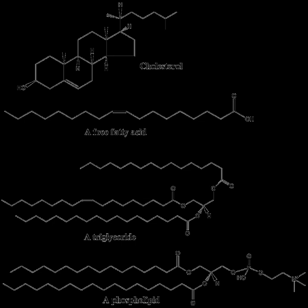In animals, when there is an oversupply of dietary carbohydrate, the excess carbohydrate is converted to triglycerides. This involves the synthesis of fatty acids from acetyl-CoA and the esterification of fatty acids in the production of triglycerides, a process called lipogenesis. Fatty acids are made by fatty acid synthases that polymerize and then reduce acetyl-CoA units. The acyl chains in the fatty acids are extended by a cycle of reactions that add the acetyl group, reduce it to an alcohol, dehydrate it to an alkene group, and then reduce it again to an alkane group. The enzymes of fatty acid biosynthesis are divided into two groups: in animals and fungi all these fatty acid synthase reactions are carried out by a single multifunctional protein, while in plant plastids and bacteria separate enzymes perform each step in the pathway.